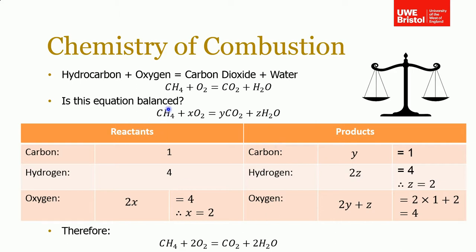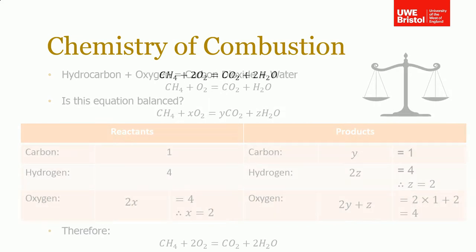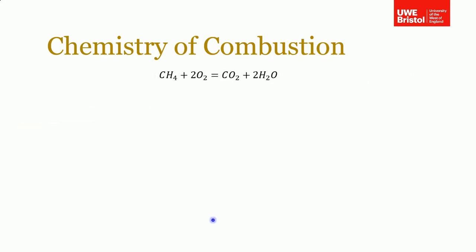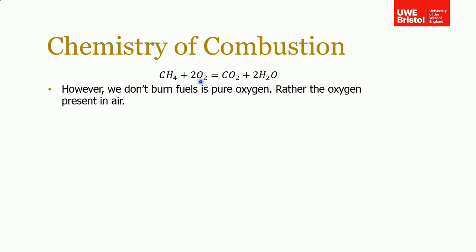Just to remember: one unit of fuel, we don't know how much oxygen, carbon dioxide, or water, so we give them symbols X, Y, and Z. We have reactants on one side, products on the other. Working out how much carbon, hydrogen, and oxygen we have on each side gives us a set of simultaneous equations which we can solve to balance our chemical formula. We've balanced it and that's correct as it stands. But the problem is that we don't burn fuels in pure oxygen, as this equation assumes.